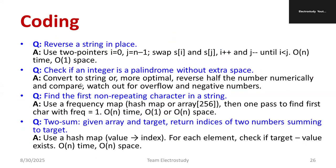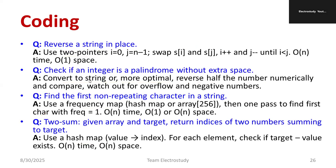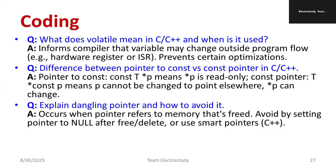If your interview date is very near and you don't have much time, prepare only these questions. Reverse a string in place using swapping. Check if an integer is palindrome without extra space — reverse half the number numerically, then compare; check for overflow and negative numbers. Find the first non-repeating character using a frequency map, also known as a hash map. For two sum, given an array and a target, return indices of two numbers summing to the target — use a hash map. You can use textbooks or AI tools, but at interview time you should be able to speak or answer objective questions.